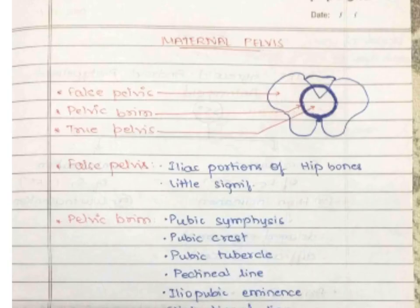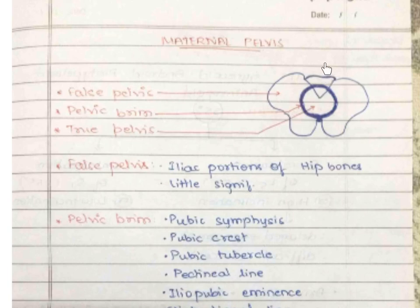The maternal pelvis can be divided into three parts: the false pelvis, the pelvic brim, and the true pelvis. The pelvis is formed by two innominate bones plus the sacrum and coccyx — four bones in total. The sacrum is formed by five fused pieces. The false pelvis is made up of the iliac portions of the innominate (hip) bones only.